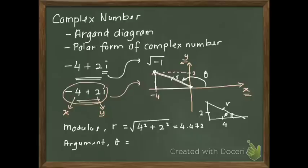How do you find psi? Use the tangent. Tangent psi equals 2 over 4. So you will get psi equal to 26.57. In this case, the argument for negative 4 plus 2i is 26.57 degrees.